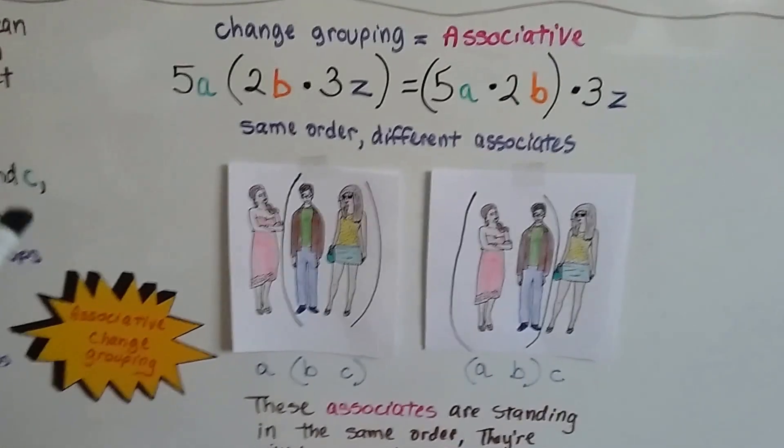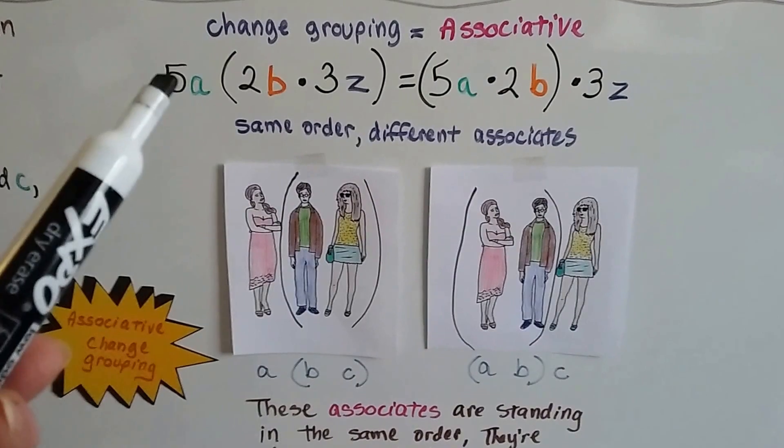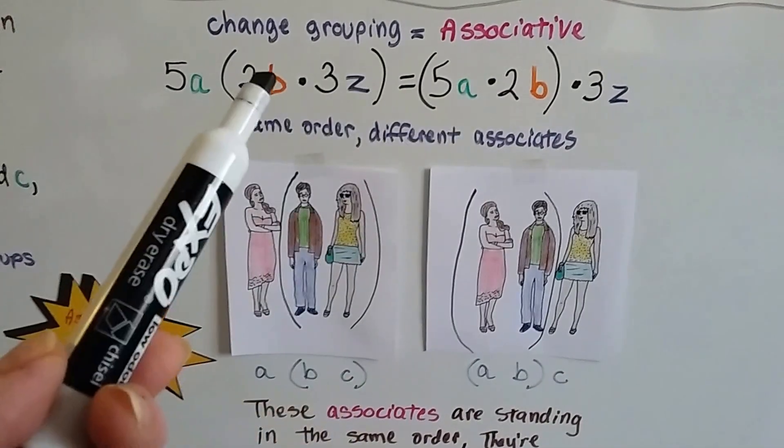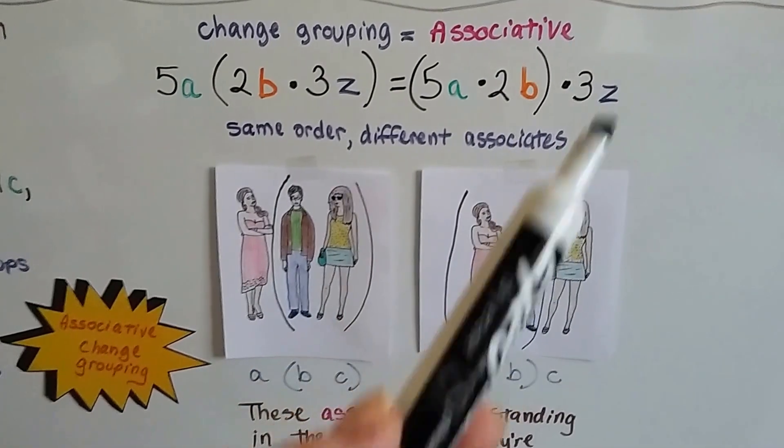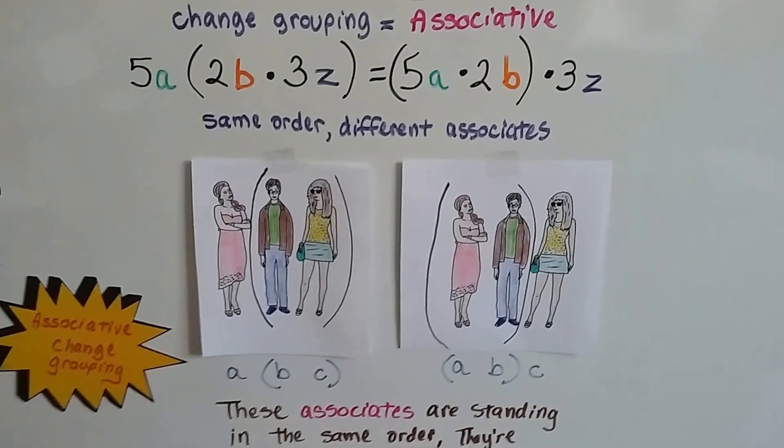So you change that grouping in the associative and we have 5A first, 5A first, then 2B, and then 3Z, then 2B, then 3Z. It's the same order, different associates.